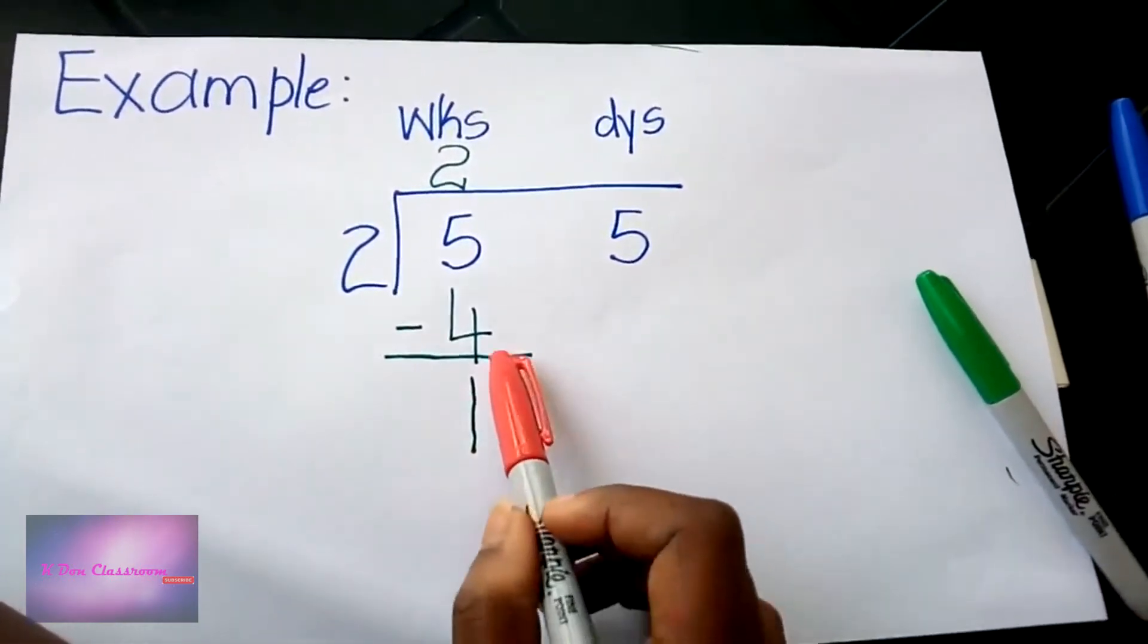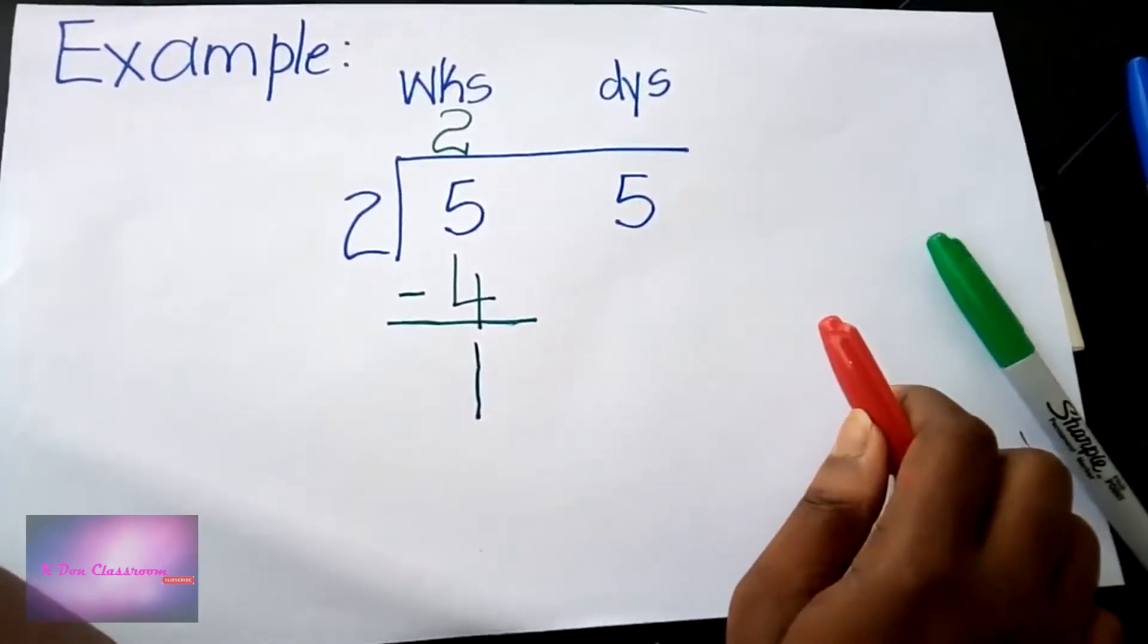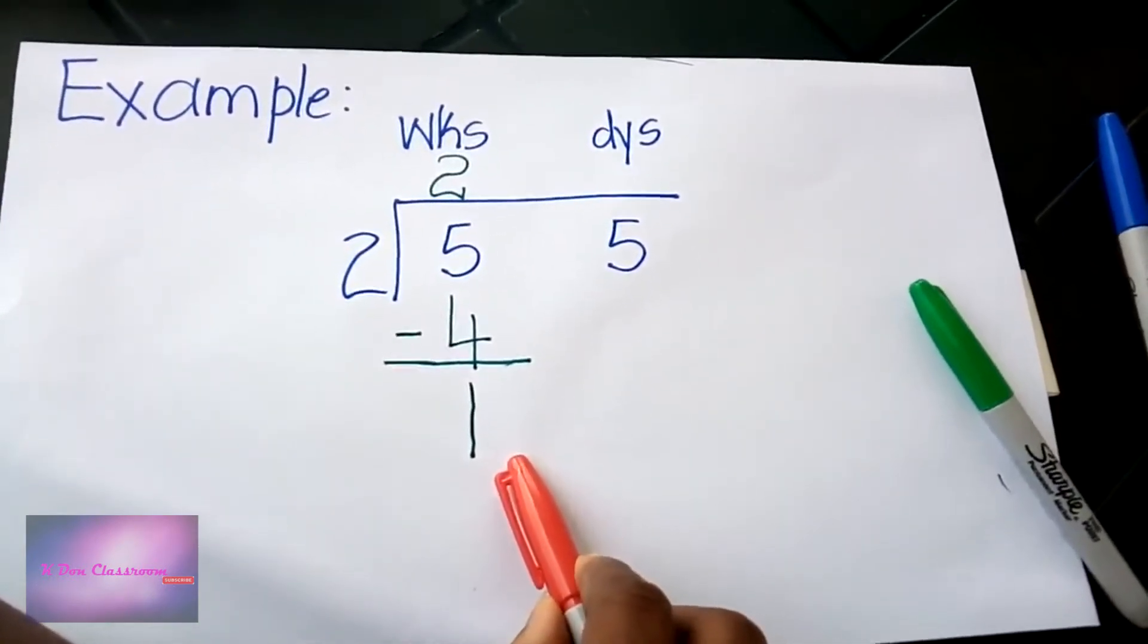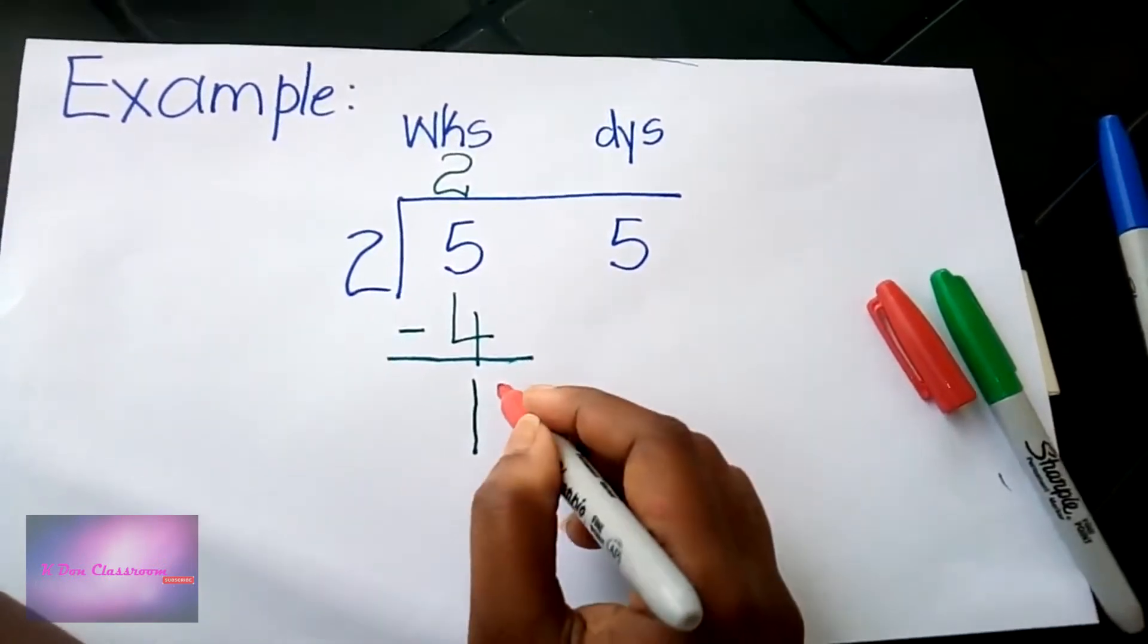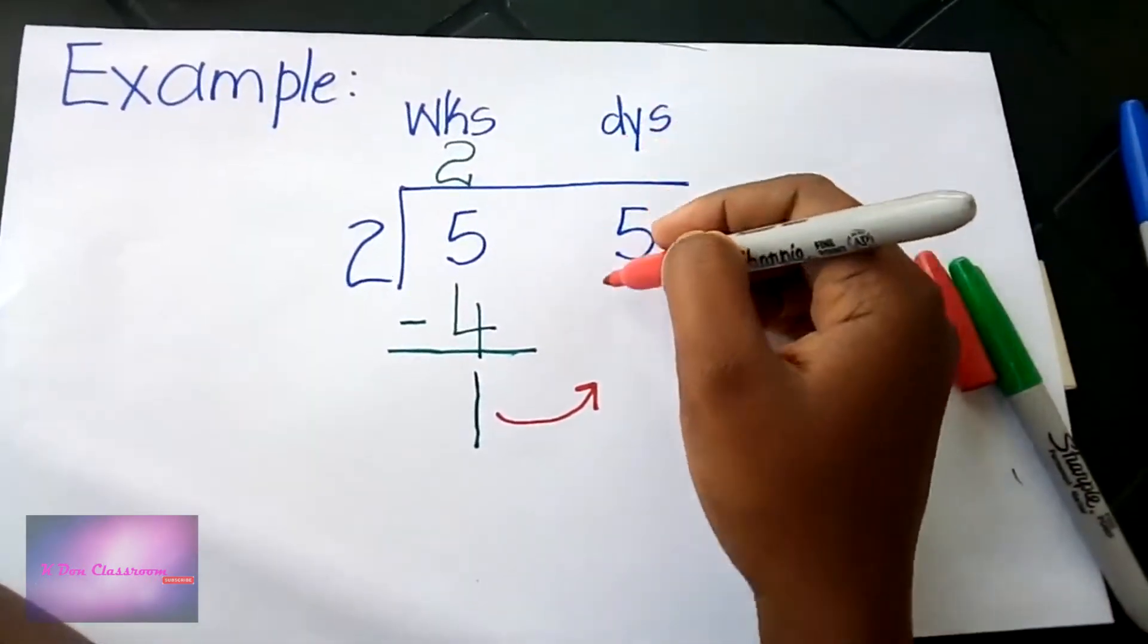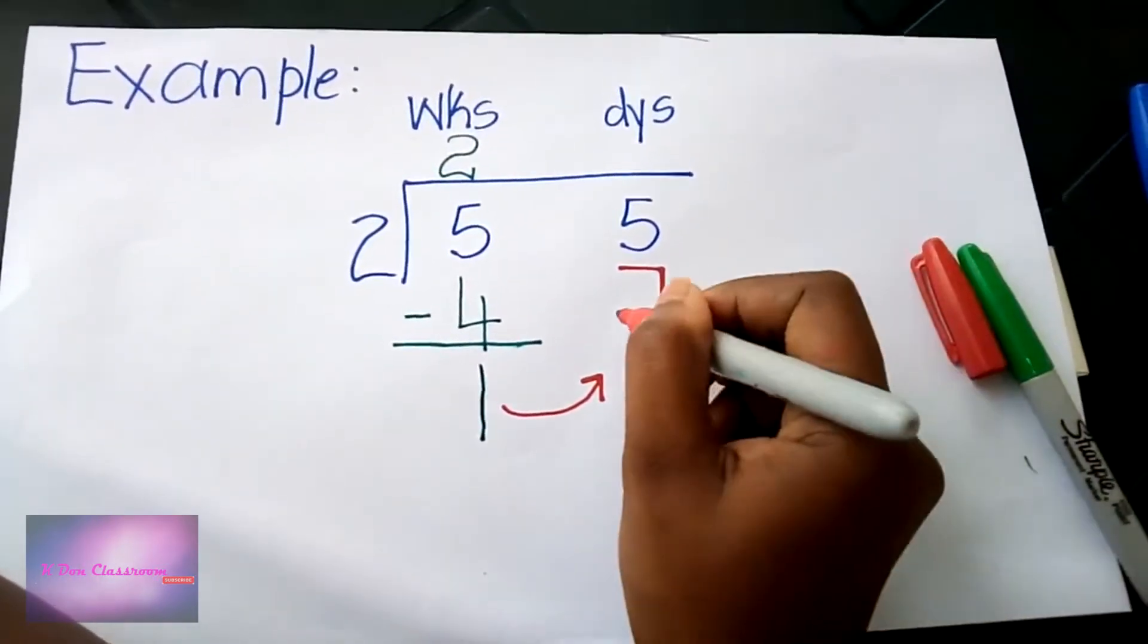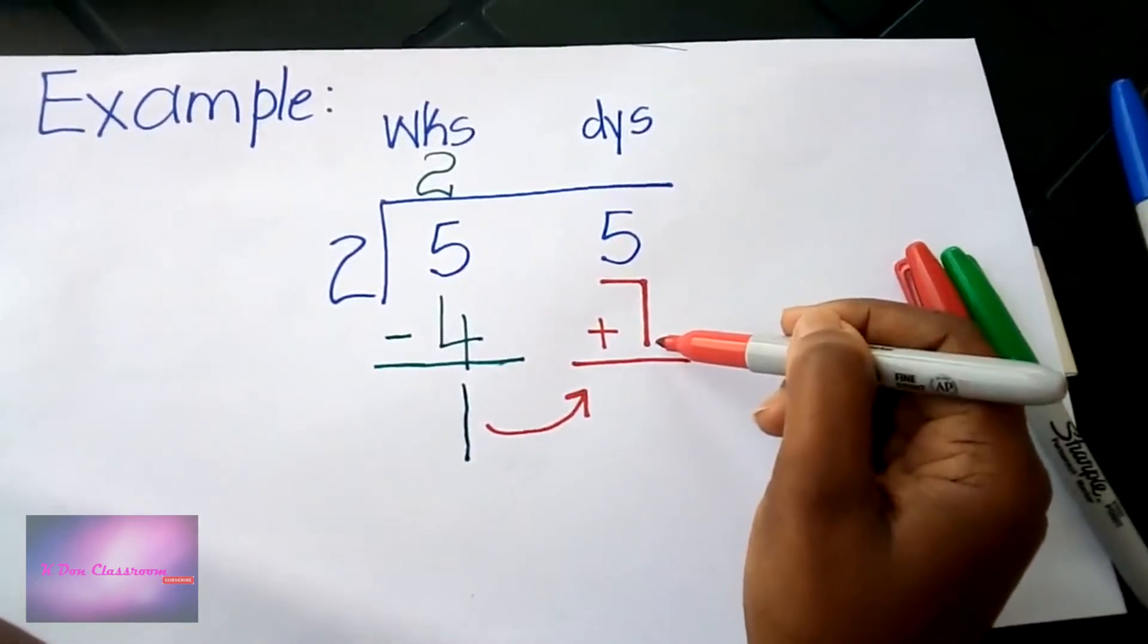We are going to convert this one week into days. How many days are in one week? Seven days. So this one week is the same as seven days. I'm going to change it to days and it will become seven days. I'm going to take my seven days and bring it over to my days column, so I will write seven below this five.